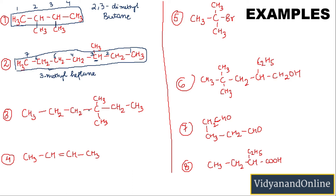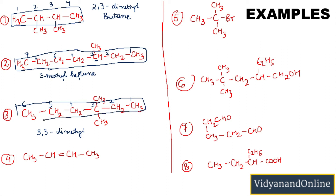Now let us consider this compound. There are two methyl groups attached. If we number left to right, they would be at position 4; if right to left, at position 3. So we number right to left: 1, 2, 3, 4, 5, 6. Both methyl groups are at the third position. Since there are two methyl groups, we write 'dimethyl' — so the prefix is '3,3-dimethyl'. The longest chain has 6 carbons, so the root word is 'hex'. Single bond gives '-an', no functional group gives '-e'. The name is 3,3-dimethylhexane.